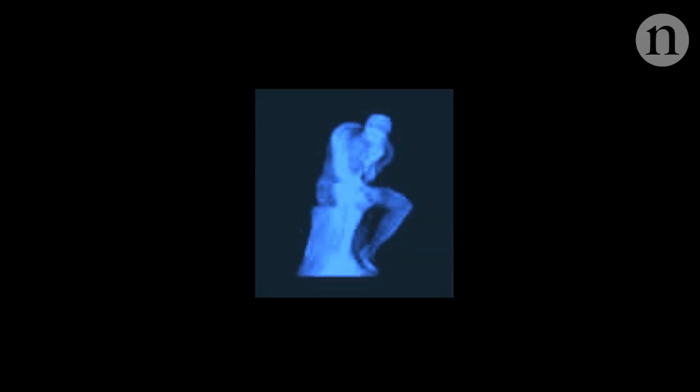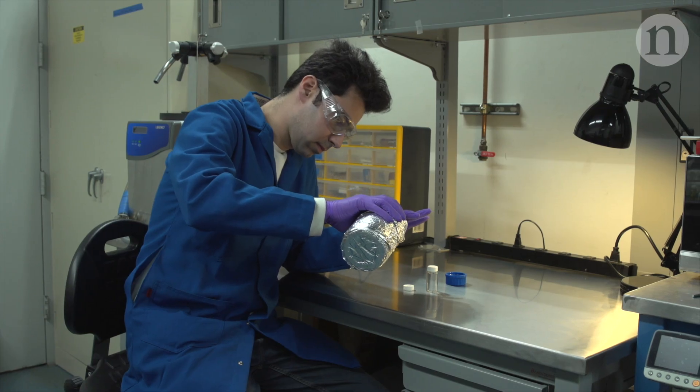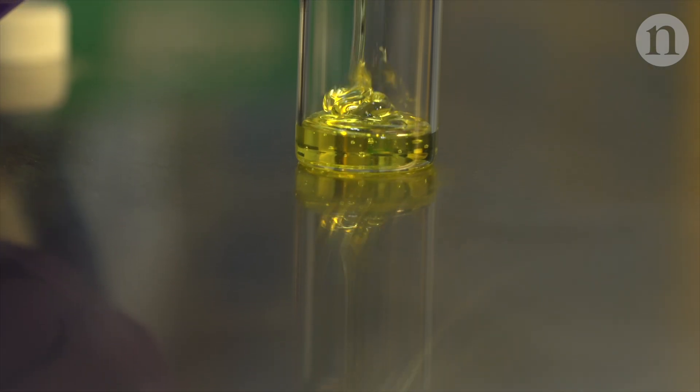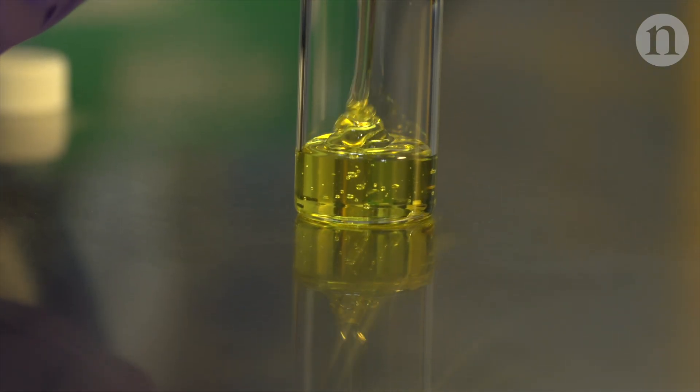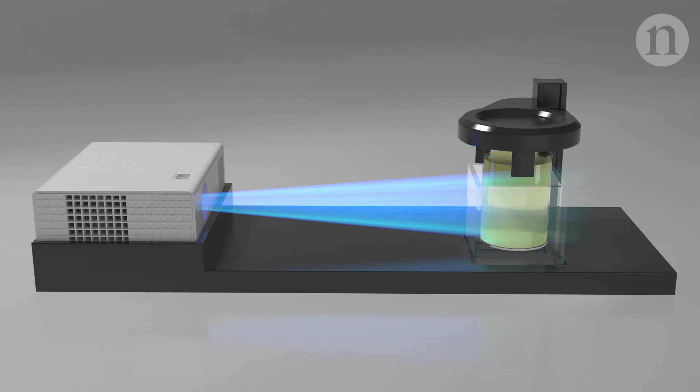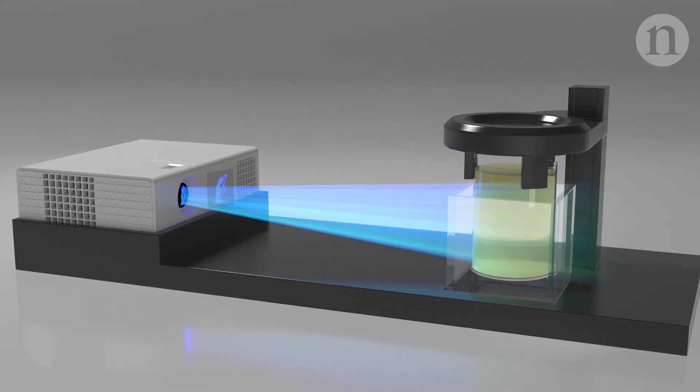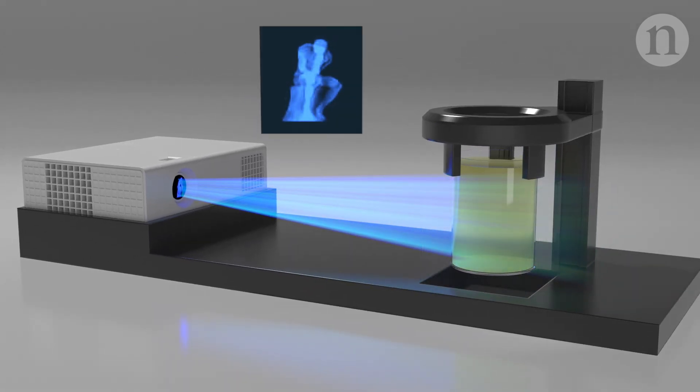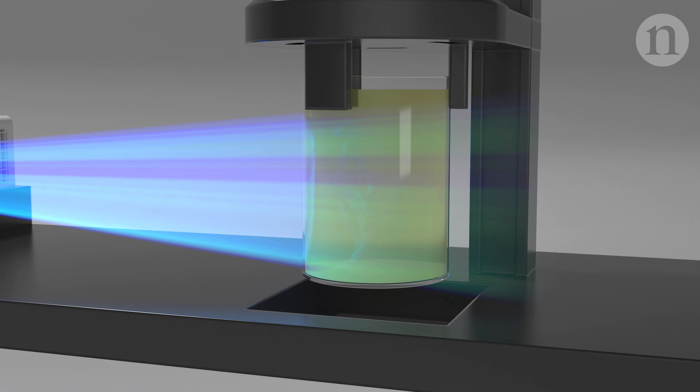Then they could composite all the slices into a video sequence. Next, they fill the cylinder with a synthetic resin, which solidifies in contact with certain intensities of light. By projecting the video onto the cylinder and rotating the cylinder in time, the slices are reconstructed in the resin as it solidifies.